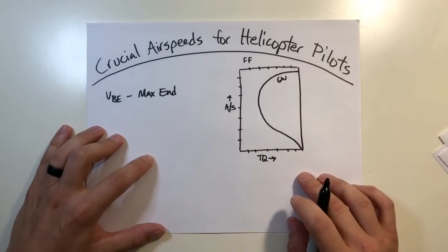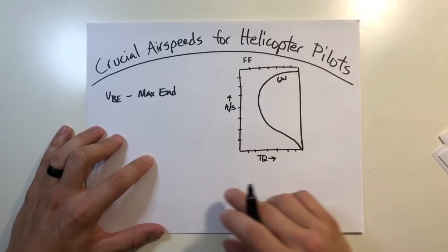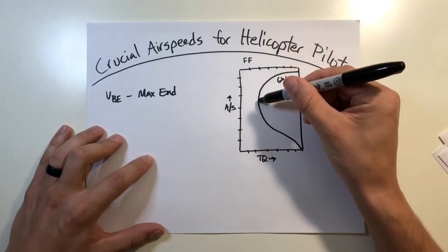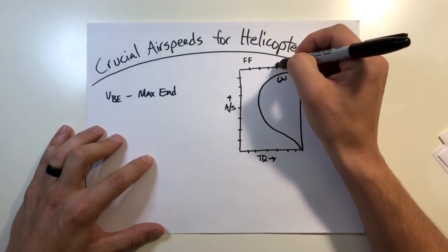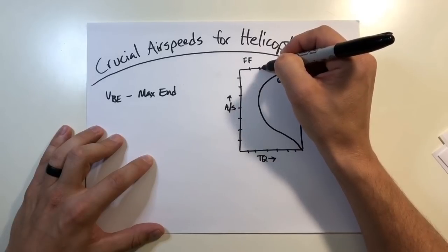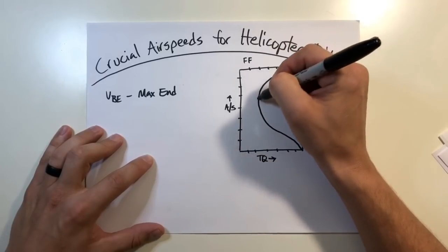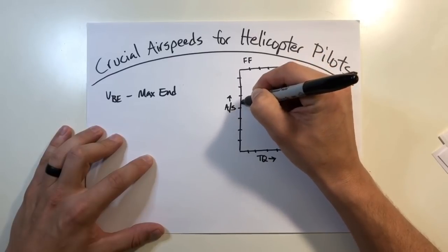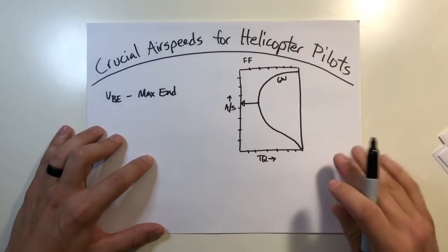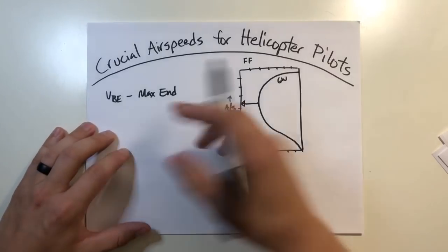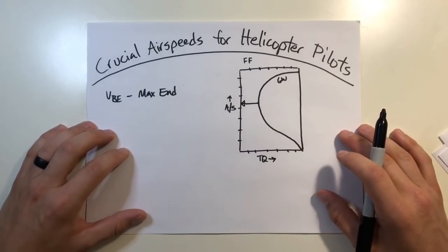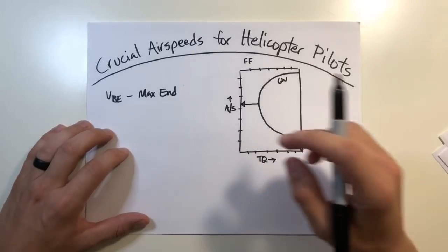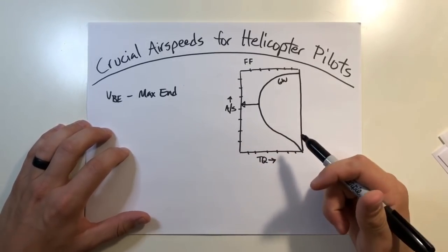But for the purposes of this, max endurance airspeed is going to be at the point where the fuel flow is the least and you can still maintain flight. So you're generally going down to where's the least amount of fuel flow I can get away with and figuring out where that is on your gross weight line and getting that speed right there. So this is going to be your max endurance, your VBE, your best endurance airspeed.